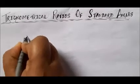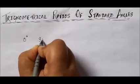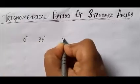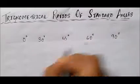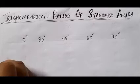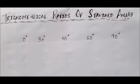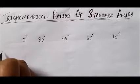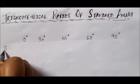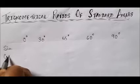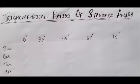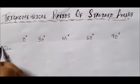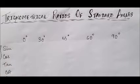The standard angles are 0 degree, 30 degree, 45 degree, 60 degree, and 90 degree. We have to find out the trigonometrical ratios for these angles. Our first trigonometrical ratio is sine, then we have cos, then tan, and then cot, sec, and cosec. These are the six trigonometrical ratios we need to find the values for.